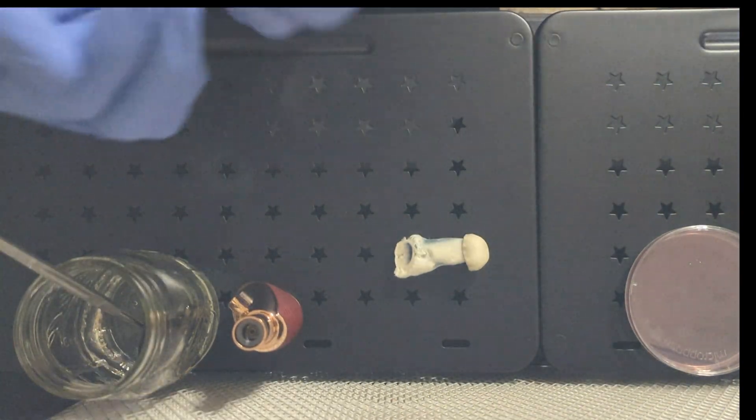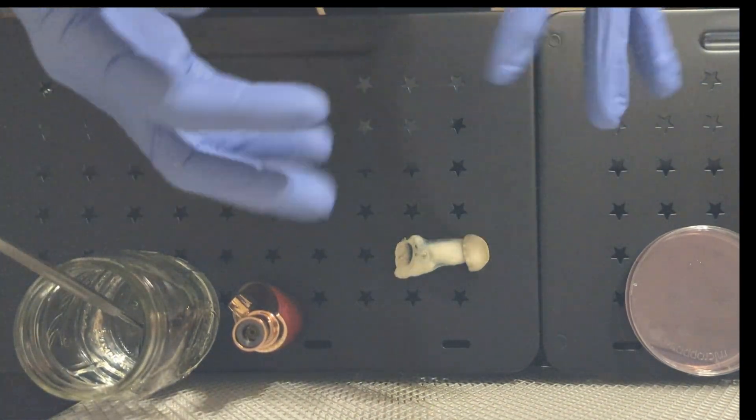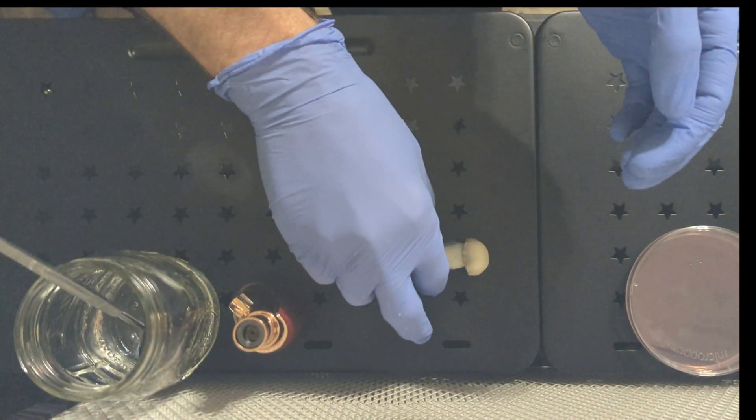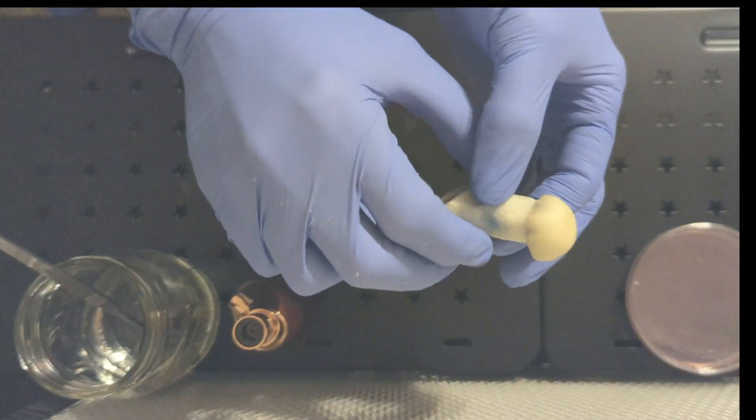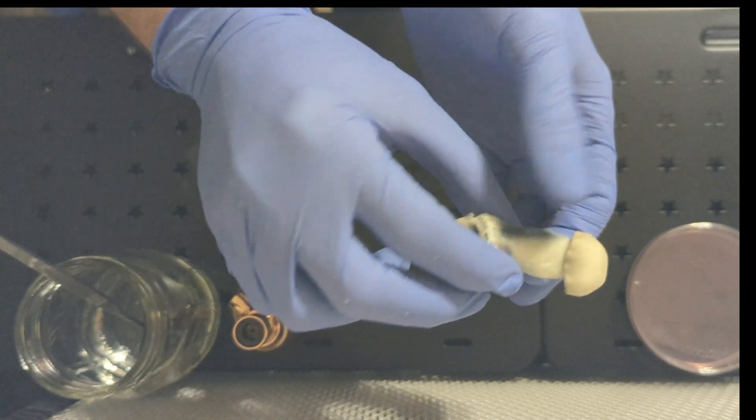You want to try and get them before they open up all the way so they're not covered in spores. The earlier you clone them the better. You just want to make sure they're thick enough that you can rip it in half.